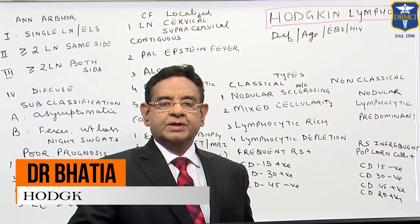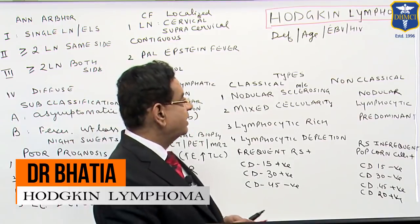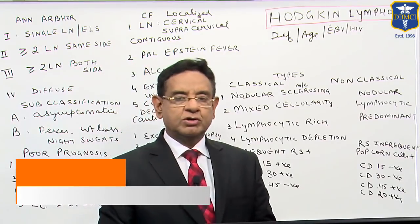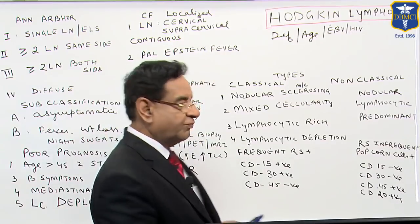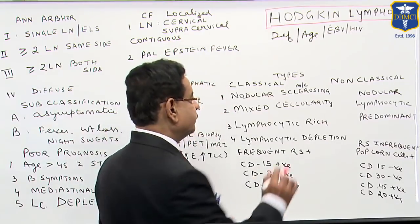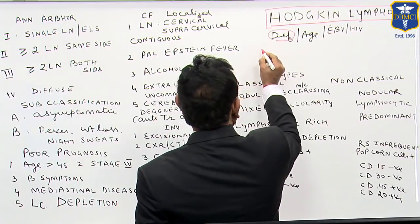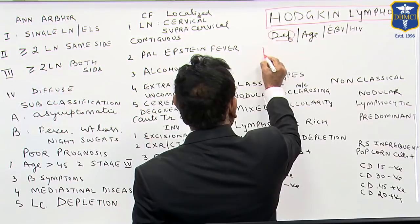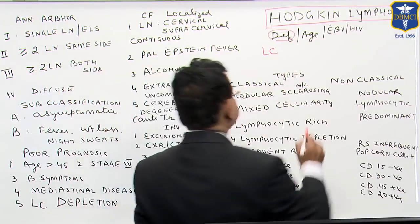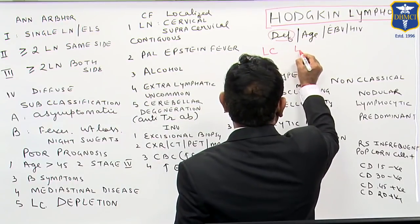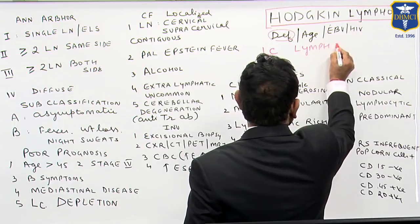Hello friends. Now I will be talking to you about Hodgkin's lymphoma, also known as Hodgkin's disease. First of all, let us see the definition. It is the malignant transformation of the lymphocytes, primarily in the lymphatic tissue or lymph nodes.